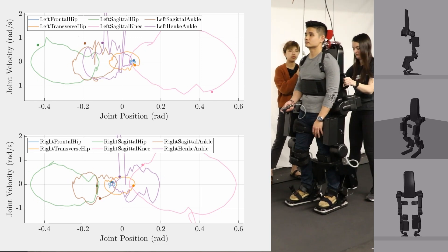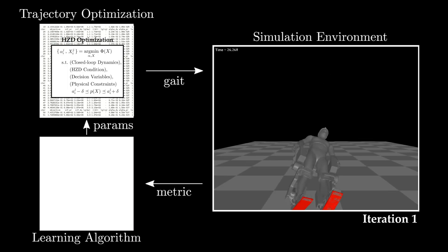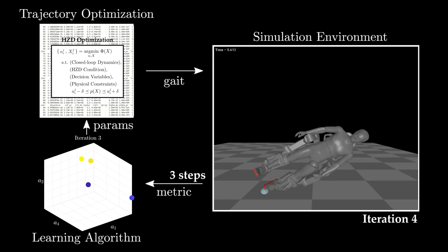It's also possible to use iterative learning to optimize these gaits for various metrics. For example, here we show a simulation in the loop framework in which the gaits are optimized for the total number of steps taken in simulation.